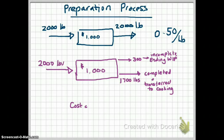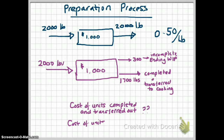We have to figure out the cost of the completed and transferred out units, and also calculate the cost of our ending work-in-process inventory. To do this, we need to bring our output to the same type of units by calculating what we call equivalent units for the units in ending work in process. That will be covered in the next section.